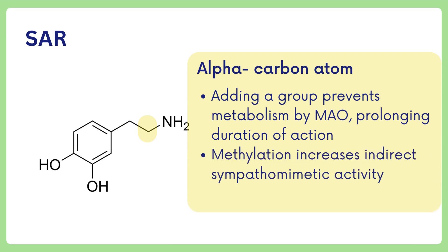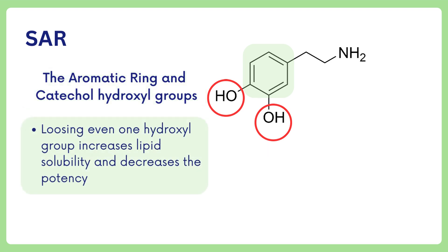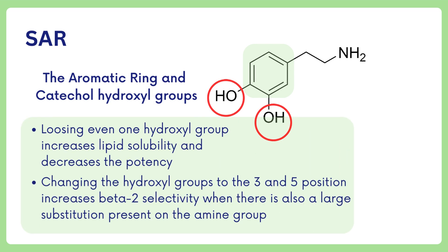Methylation on the alpha-carbon increases indirect sympathomimetic activity. Regarding substitution on the aromatic ring and catechol-hydroxyl groups: losing even one hydroxyl group increases lipid solubility and decreases potency. Changing the hydroxyl groups to the 3 and 5 position increases beta-2 selectivity when there is also a large substitution present on the amine group.